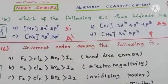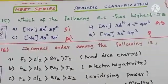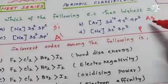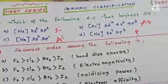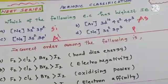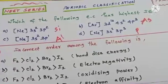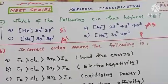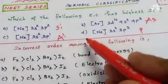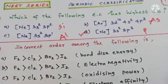Both elements belong to group 15 (nitrogen group): nitrogen, phosphorus, arsenic, antimony, bismuth. When we go down a group, ionization enthalpy decreases. Arsenic is placed below phosphorus, so arsenic has lesser ionization enthalpy than phosphorus. Therefore, the highest ionization enthalpy is option D — [Ne] 3s² 3p³ (phosphorus).